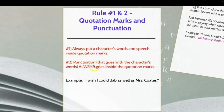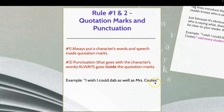The second rule is that punctuation that goes with the character's words always goes inside the quotation marks. A lot of kids will put that period or question mark outside of the quotation mark — that's incorrect. It goes inside the quotation mark. Here's a good example: opening quote, capital letter, 'I wish I could dab as well as Mrs. Coates,' period inside that ending quotation mark.